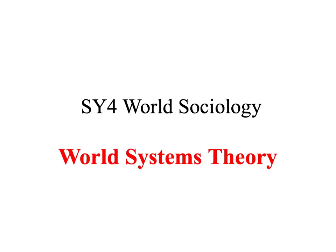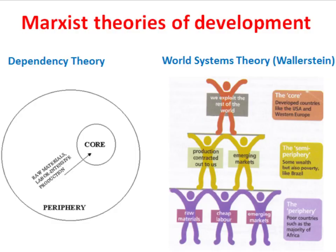In this World Sociology Screencast, we're going to take a look at a perspective called World Systems Theory. World Systems Theory is a perspective associated with the work of Immanuel Wallerstein, and the easiest way of understanding this perspective is to see it as essentially a modified version of Dependency Theory. Both of these perspectives share a basis in Marxism — a kind of Marxist critique of global capitalism.